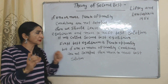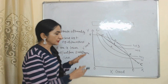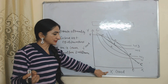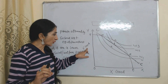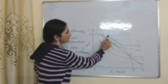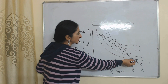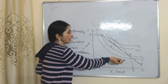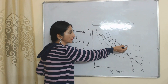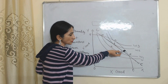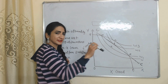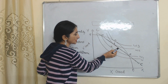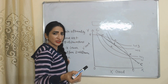Now with the help of this diagram we will understand the Theory of Second Best. On the x-axis we have X good, and on the y-axis we have Y good. PP1 is the production possibility curve. W1, W2, and W3 are social welfare indifference curves — a higher social welfare indifference curve means welfare of society is increasing, and a lower one means welfare is reducing. CC is the constraint curve, which tells us that because of some constraint or problem we are not able to achieve the Pareto optimality point.